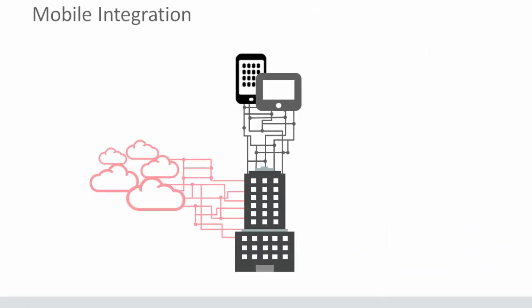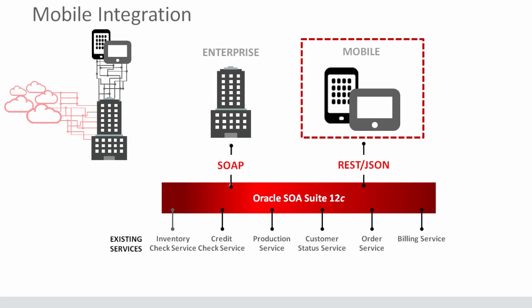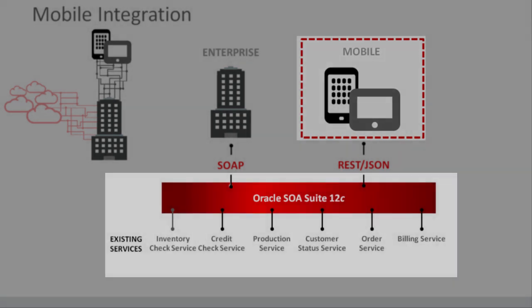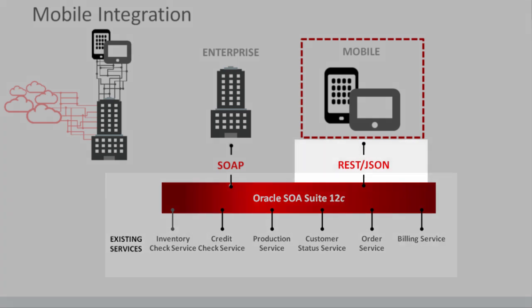In addition to cloud integration requirements, you have what could be even more urgent requirements to mobile enable your business applications. Here's an example of how easy it is if we want to REST enable a service. Perhaps we have a mobile device that we want to make a call to validate a payment. In Oracle SOA Suite 12C, we can enable these back-end services tied to our business applications using REST APIs and JSON standards to build mobile apps.